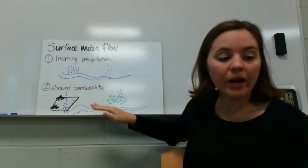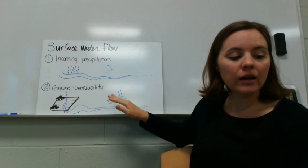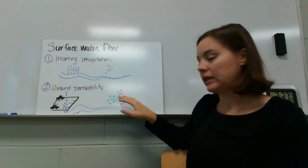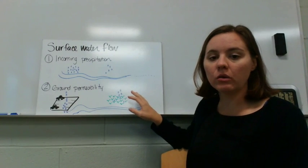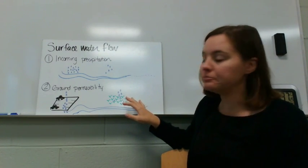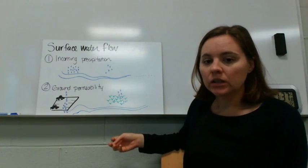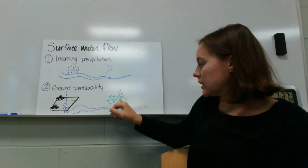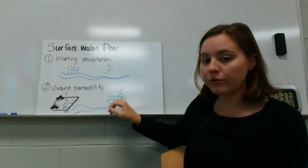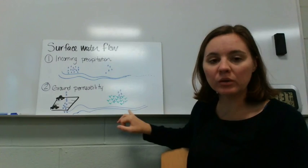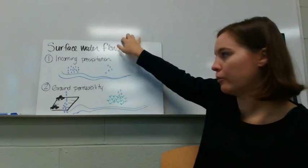If you have a more permeable ground cover, like something that's covered with vegetation or sandy soils, then that water is actually going to be able to infiltrate into the soil very easily. And so it's going to get soaked up in the soil before it gets to the river, so the surface water is actually going to remain pretty constant in its flow or volume.